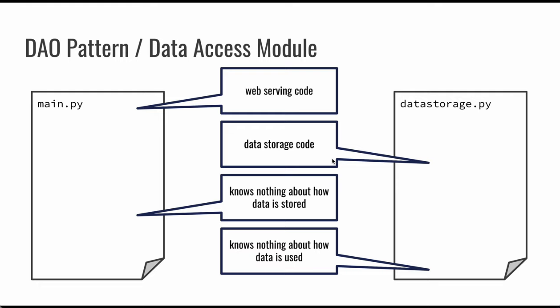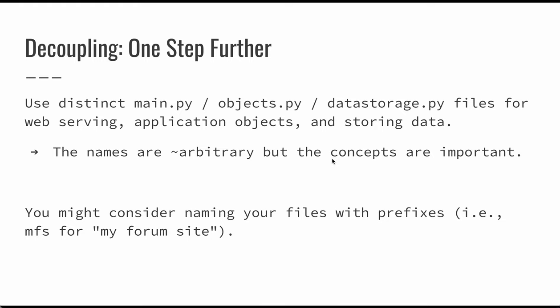We're still going to have business logic and the rules that our site has to follow, and that's still going to be in the main.py. But we can go a little bit further. We can think about how we have a main.py file and we could also introduce potentially an objects.py. That would allow us to create a centralized set of data that will move around through our application. So we have main.py for web serving, objects.py to define all of my application objects, and a data_storage.py that's going to take those application objects and store them in the data source, as well as retrieve them from the data source as objects. The names here are arbitrary, but the concepts are really the important thing.